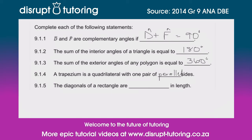And then finally, the diagonals of a rectangle are equal in length. So if we've got our rectangle, we're talking about the diagonals — these ones. What do you notice about them? Well, you notice that they are equal in length.